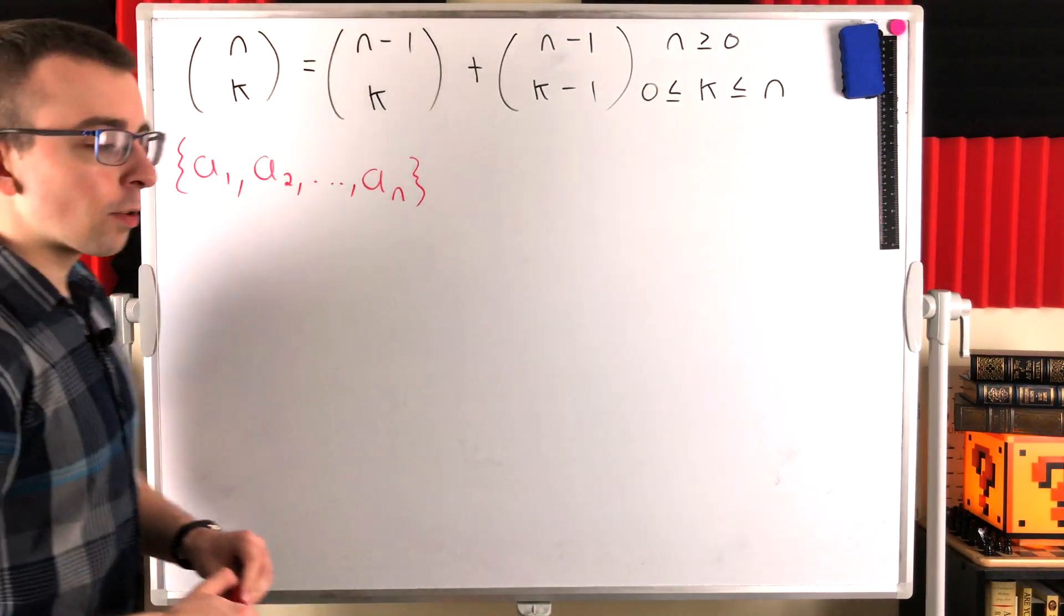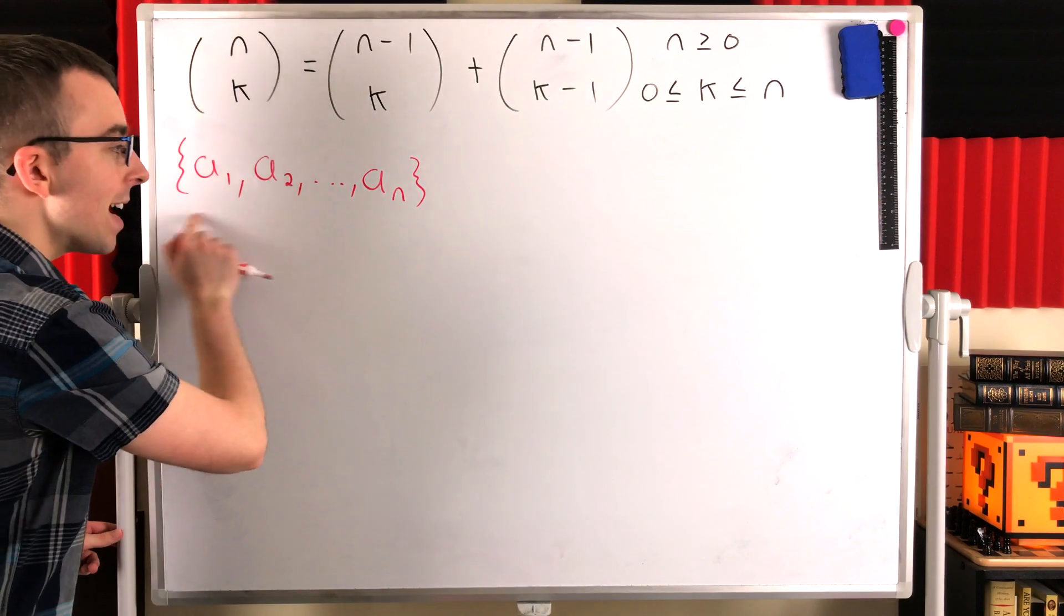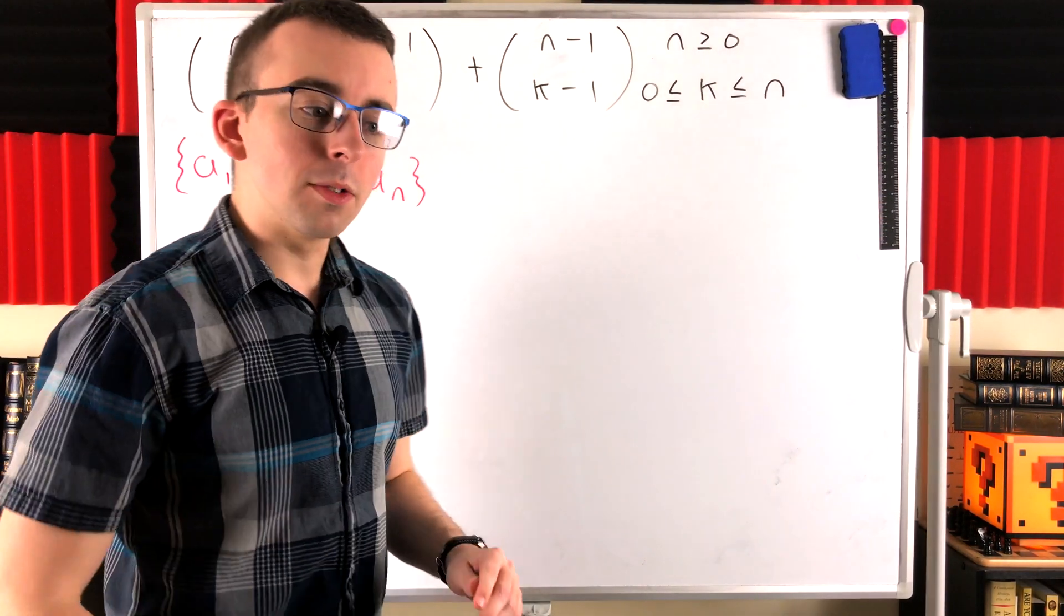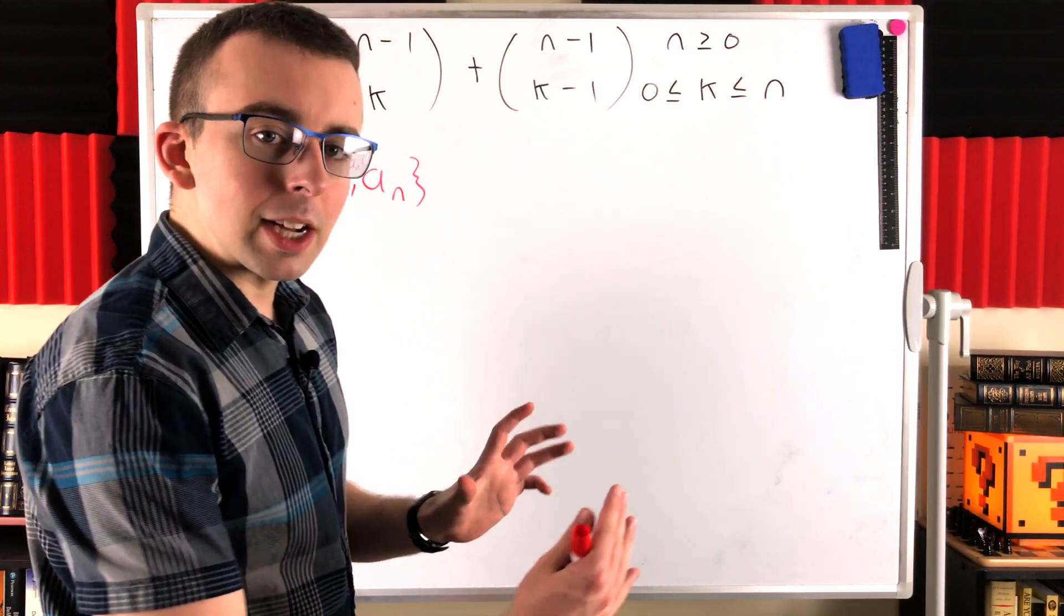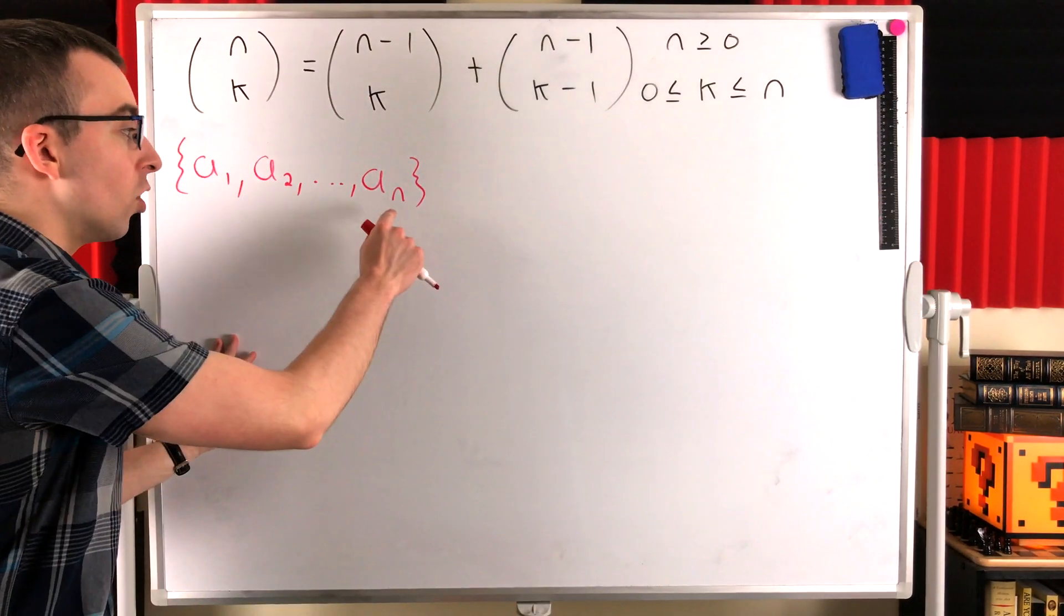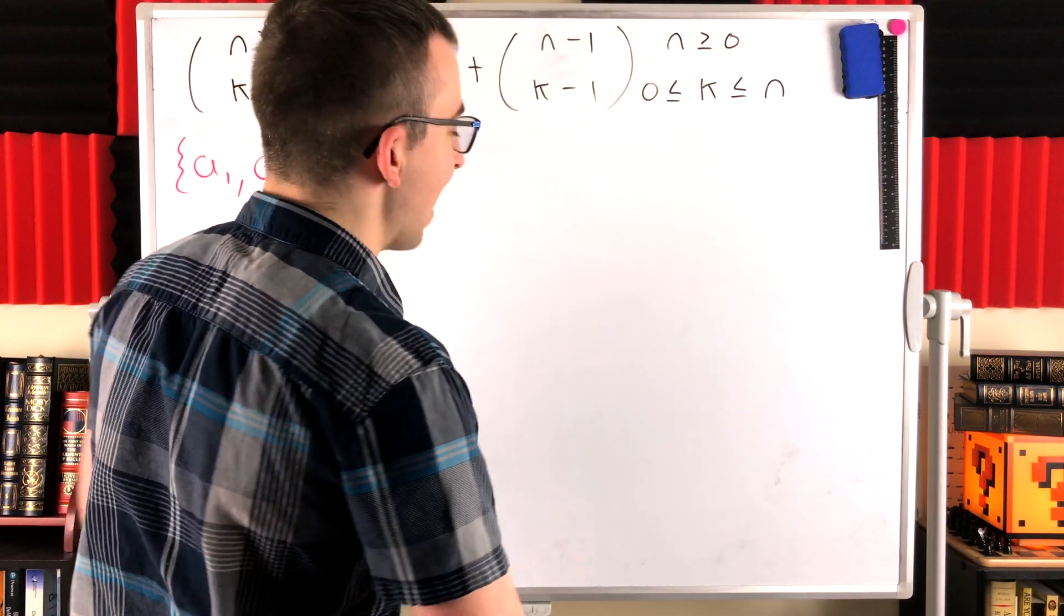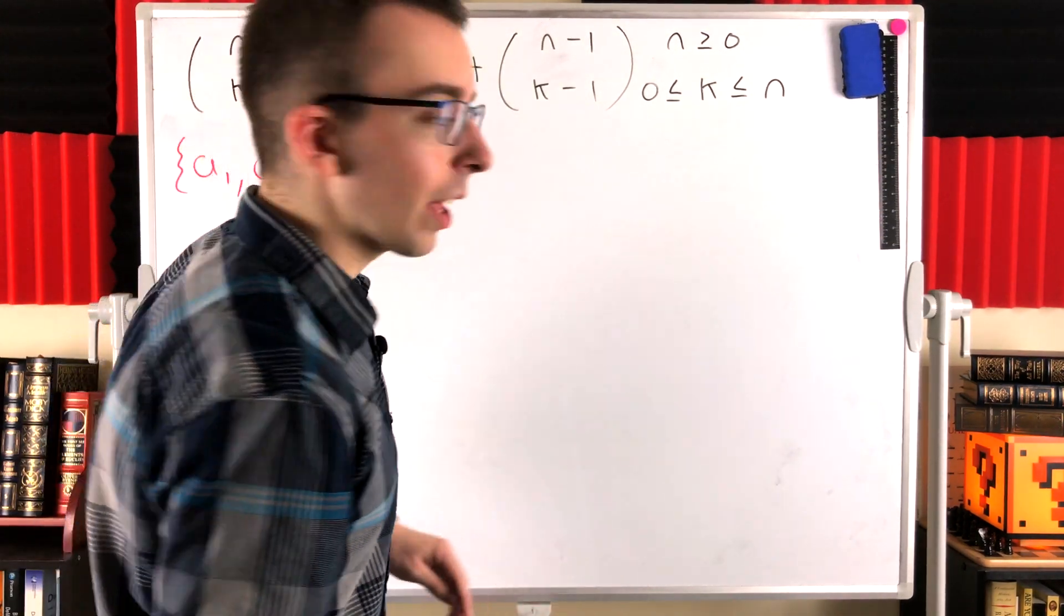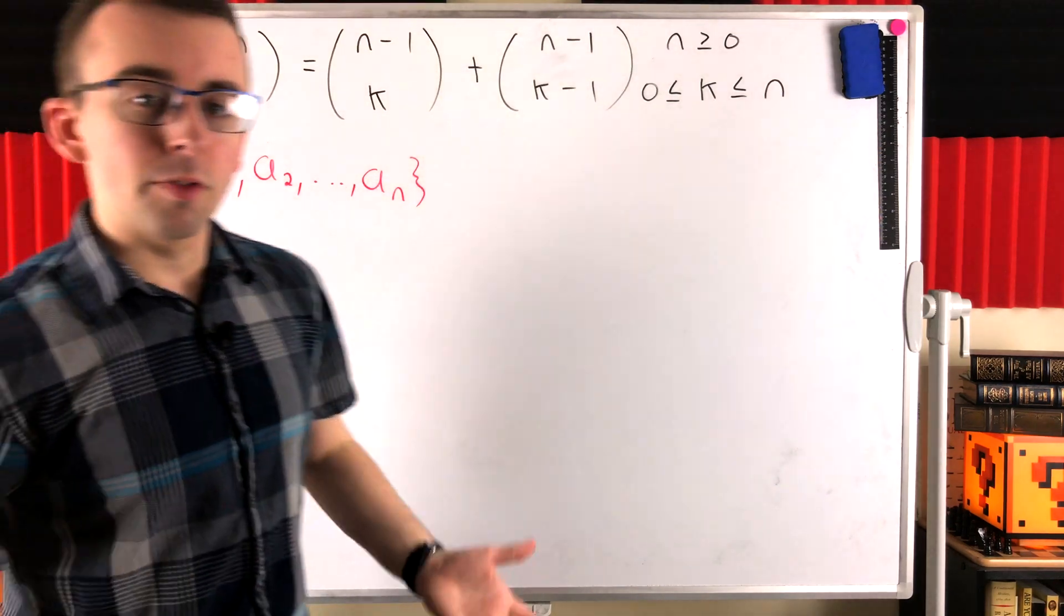Well, again, we're considering the number of k element subsets that we can make from this n element set. Let's separate those collections of k objects or k elements. Let's separate them into the collections that don't include a_n and the collections that do include a_n. A_n is just an arbitrary choice. We could just as well separate them using any other element of the set, but let's just fix a_n.